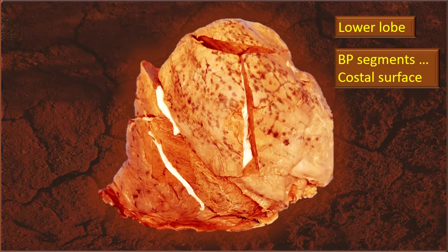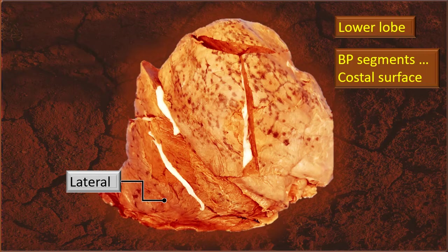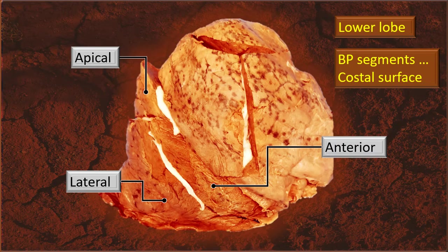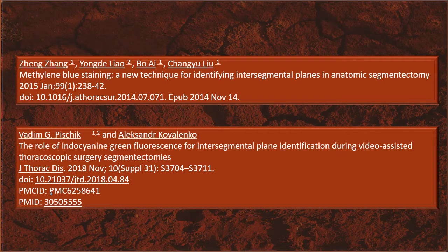Now let's re-identify the bronchopulmonary segments from the costal surface. Only the bases of the lobes are seen; the apices are on the opposite side where the tertiary bronchi enter. That is the lateral basal — this is the costal surface, right lung — lateral basal, apical of the lower lobe, and anterior basal. That was an overview.